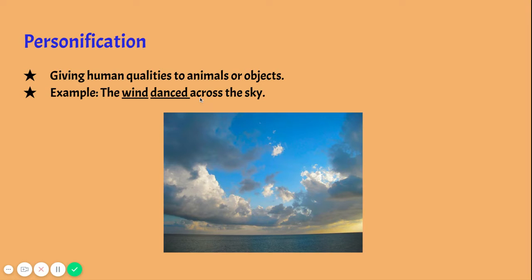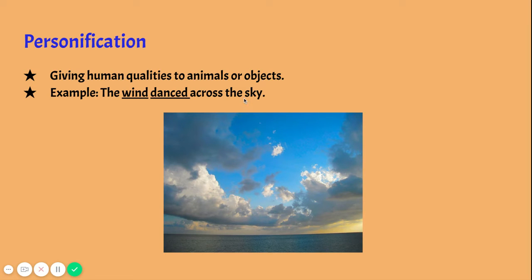Personification is giving human qualities to animals or objects. For example, 'the wind danced across the sky' — we're giving the wind a human quality by saying it danced, because dancing is something humans do. When we say the wind danced across the sky, it helps you imagine what the wind may look like — smooth or swift movements. That's really what the author wants you to see: quick movements of wind across the sky, like it's dancing.